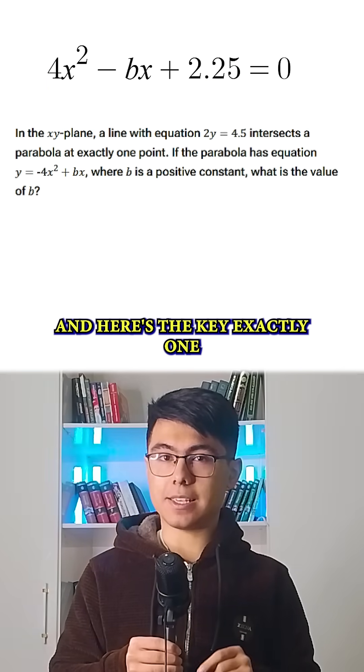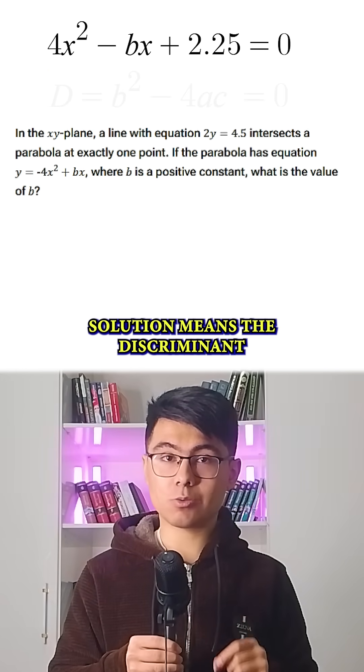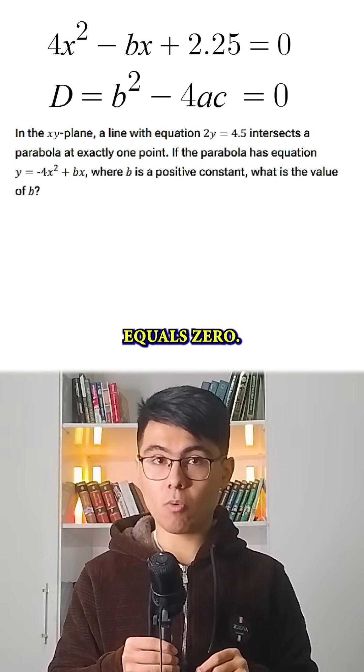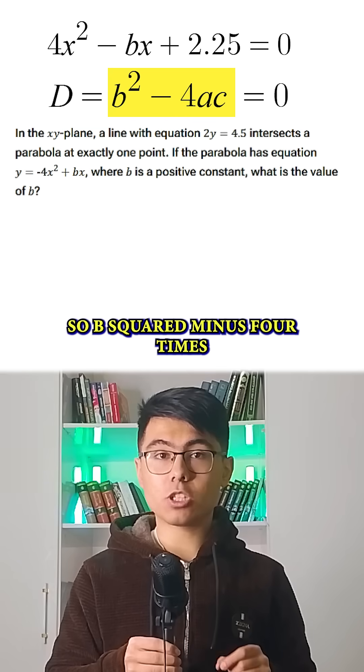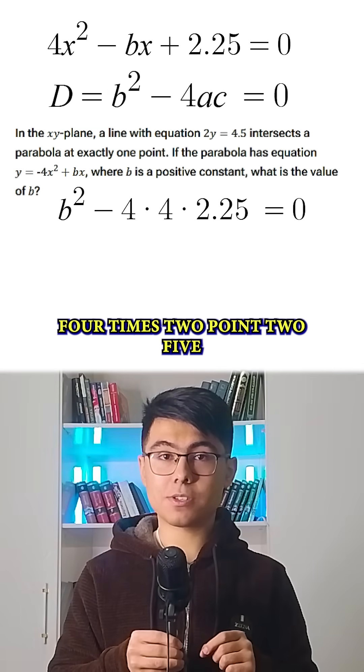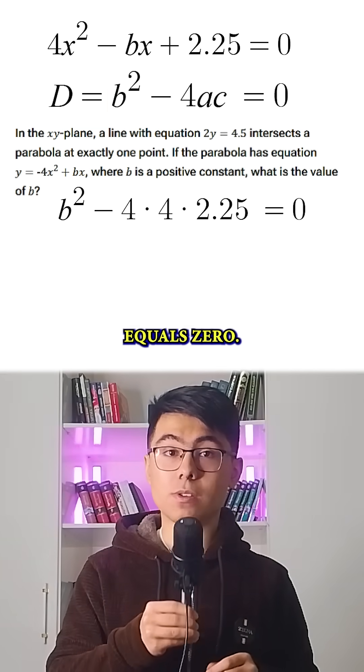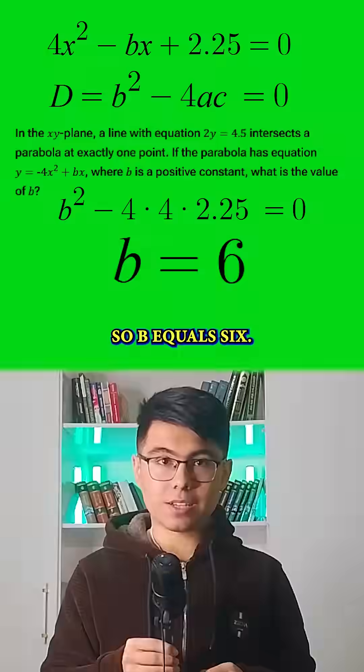Here's the key: exactly one solution means the discriminant equals 0. Discriminant is b² - 4ac, so b² - 4(4)(2.25) = 0. Therefore, b = 6.